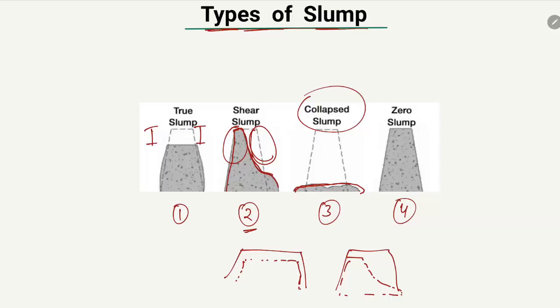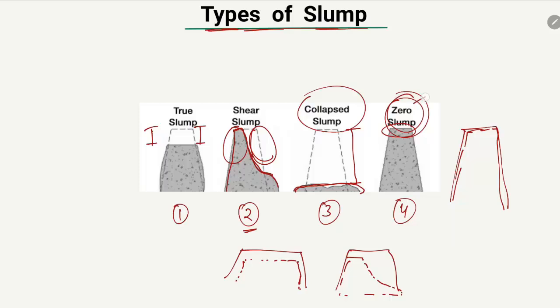The third type is the collapse slump, where the concrete completely spreads over the table. The reduction in height is too much — more than 50 or 70 percent — so we call this the collapse slump. The last one is zero slump: there is no reduction in the concrete at all, meaning the concrete height stays the same as the cone height. This indicates very low workability. I hope you guys understand the slump and its different types. Don't forget to subscribe to our channel. Thank you for watching.